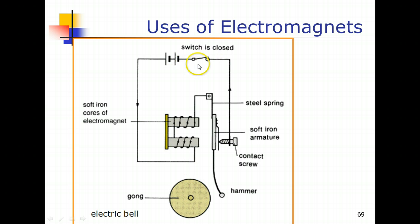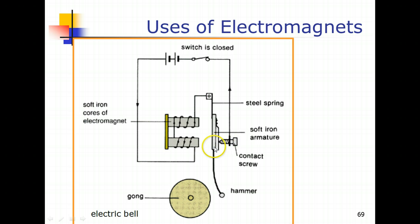When the switch is closed, current flows through the solenoid and around the soft iron core, activating the electromagnet. The magnetic field attracts the soft iron armature, which swings to the left and the hammer strikes the gong. However, as the armature moves left, contact with the contact screw is broken, opening the circuit, so the soft iron core demagnetizes. The steel spring then pulls the armature back to the right, restoring contact with the contact screw.